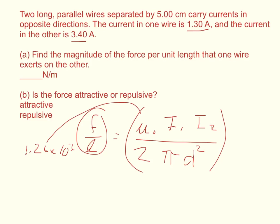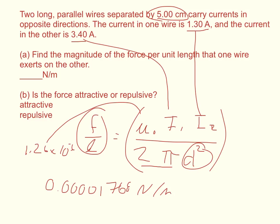So you plug in the values. Now the distance is in centimeters, so we do have to change that to 0.05 meters, and then square it, and then times it by 2 pi.